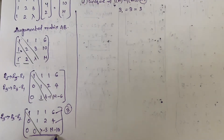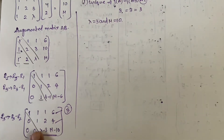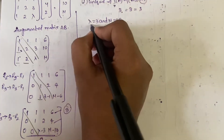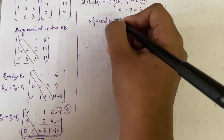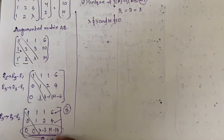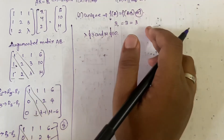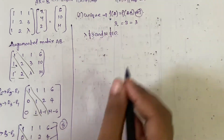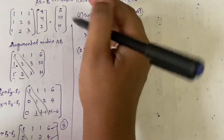If λ = 3 and μ = 10, then the third row becomes [0 0 0 | 0], which we don't want for a unique solution. Therefore the condition for unique solution is: λ ≠ 3 and μ ≠ 10. This ensures the third row is non-zero, giving rank 3, which equals the number of unknowns.